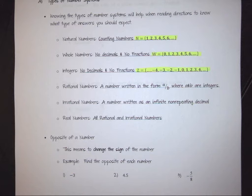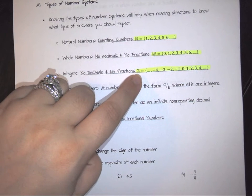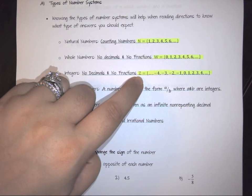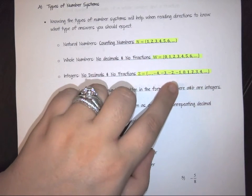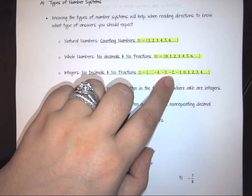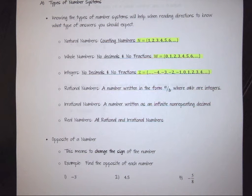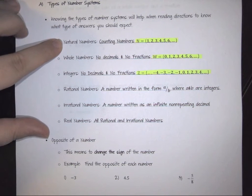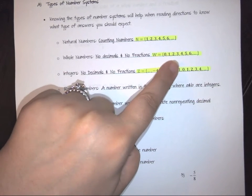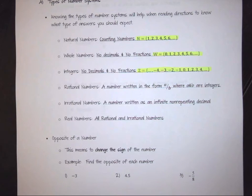Another system we have is called integers. Integers are the same as whole numbers in that they don't use decimals or fractions. They are represented by the letter Z, and if you look at the number line, these numbers go from the negative infinity side all the way through to the positive. So natural numbers are only positive starting at one, whole numbers are only positive starting at zero, and integers include everything negative and positive — except decimals and fractions.